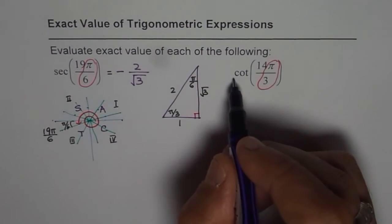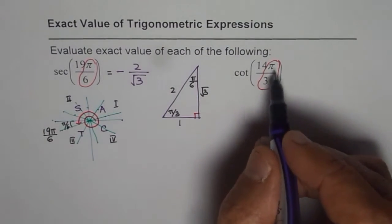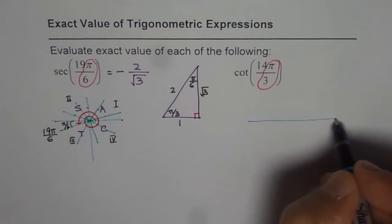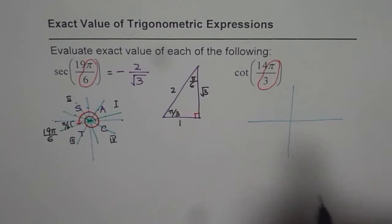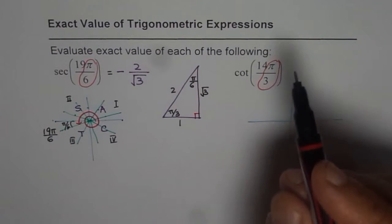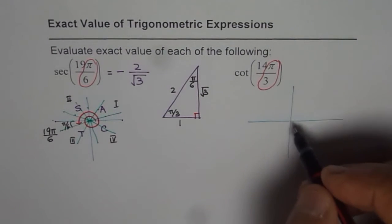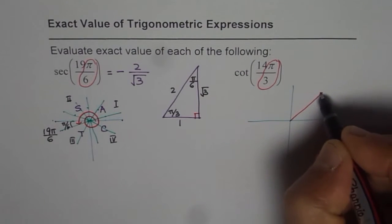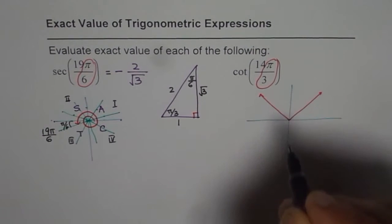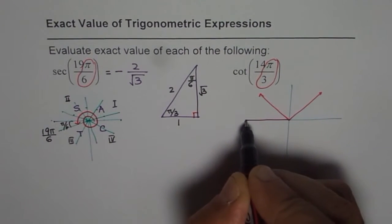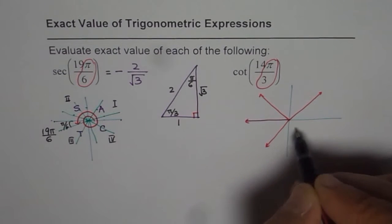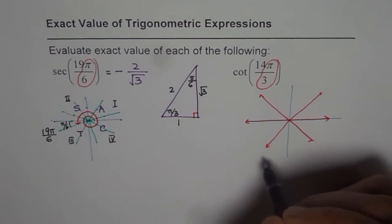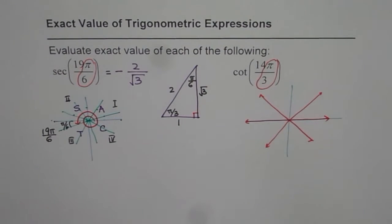Now let's look into cotangent of 14π by 3. So we will follow the same method. So say here again, 14π by 3. That is to say that our π is divided into 3 portions. So starting from here, we have 1 portion, 2 portion, 3 portion. And then 4 portions, 5 portions, and 6. So these are 6 portions. We have to go to 14.